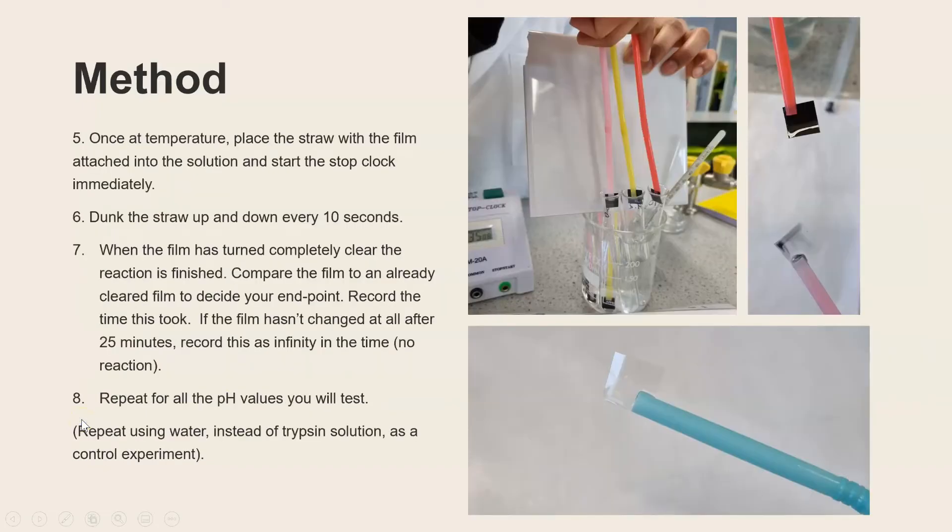So the next bit, once we've left it for five minutes and the solution is at the temperature, we'll then place the straw which has the film attached into the test tube and at that point exactly you need to start the stop clock. We'll then dunk the straw in and out of the solution every 10 seconds and when we're taking it out we're checking to have a look at the film.